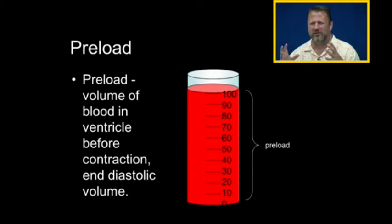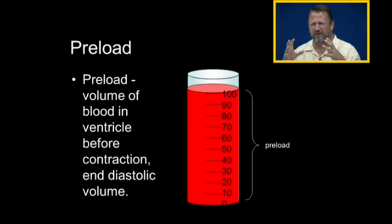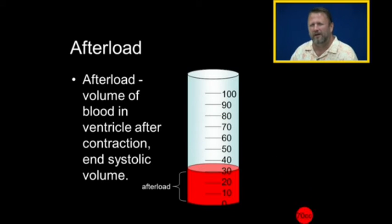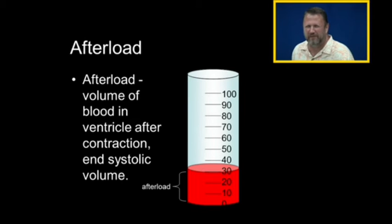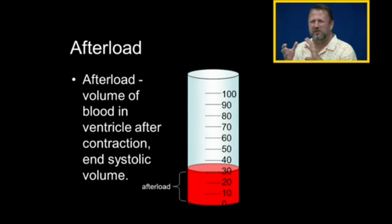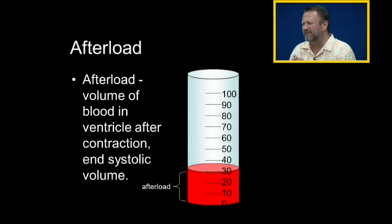Diastole is the relaxation of the heart, and so at the end of diastole there's a volume of blood ready to pump — let's say 100 milliliters. After the heartbeat, the heart has pumped out most of the blood in the ventricle, but not all of it. The afterload is the volume of blood remaining in the ventricle after contraction — the end systolic volume.